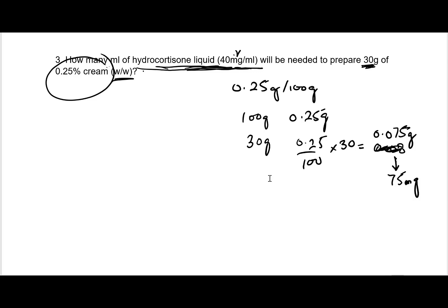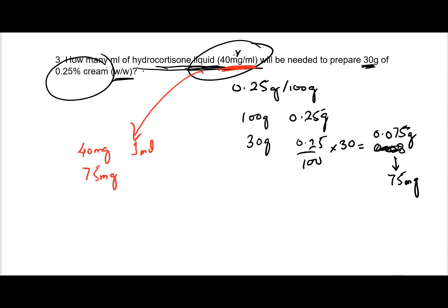I need 75 milligrams of hydrocortisone, but I have this liquid with a strength of 40 mg per ml. So from that liquid, how would I get 75 milligrams? If 40 milligrams is present in 1 ml, then 75 milligrams will be present in approximately 1.875 — so approximately 2 ml.